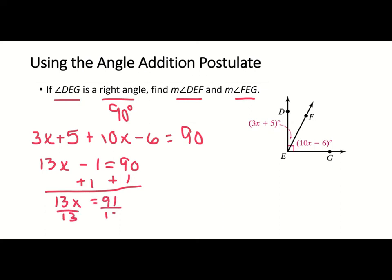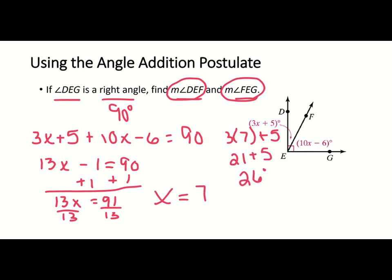Simplifying: 3x + 10x gives 13x, and 5 − 6 gives −1, so 13x − 1 = 90. Adding 1 to both sides gives 13x = 91, and dividing by 13 gives x = 7. Now plugging back in: angle DEF = 3(7) + 5 = 21 + 5 = 26 degrees. Angle FEG = 10(7) − 6 = 70 − 6 = 64 degrees. Checking: 26 + 64 = 90 degrees. That's it for section 1.5, have a great day!